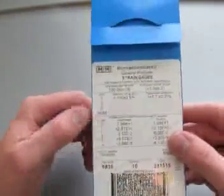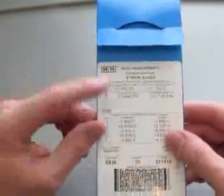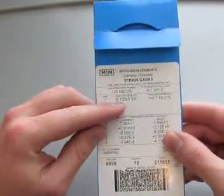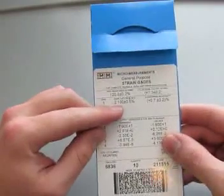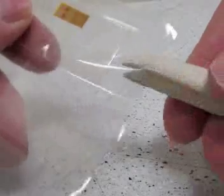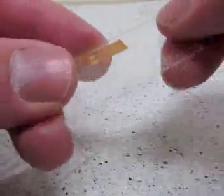So the strain gauges come in a box that looks like this, and on the back it'll tell you the resistance and the gauge factor. Try to get a gauge factor as high as you can. So then with tweezers, remove the strain gauge from the pouch that it comes in.